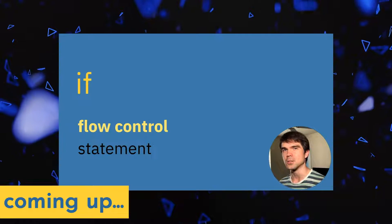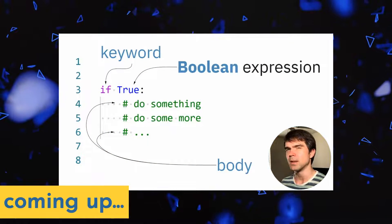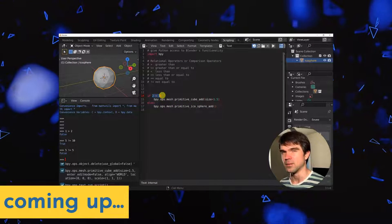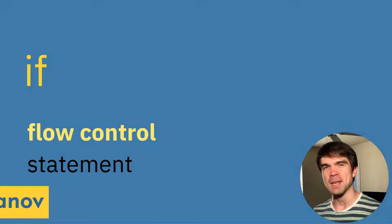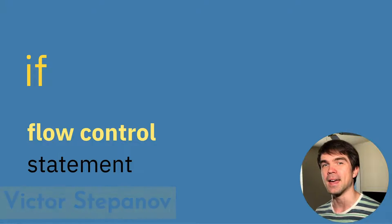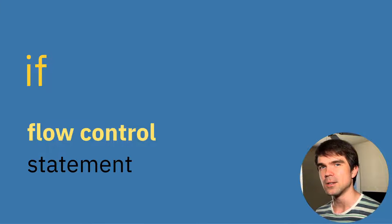This is the first video in a series of exercises exploring the if statement. We'll use the if statement to set conditions for when to run parts of the code and when to skip. My name is Viktor Stepanov and I'll be guiding you through this beginner Blender Python exercise. Today we'll be taking our first look at if flow control statements, which allow us to control what parts of the code are executed and what parts are skipped, based on the conditions that we set.